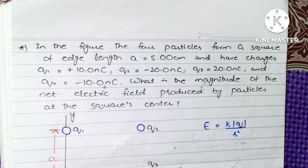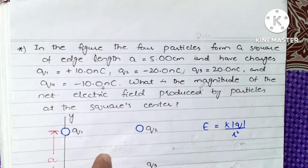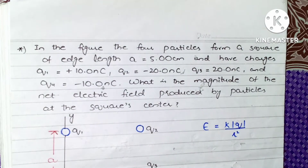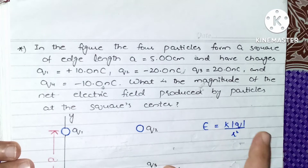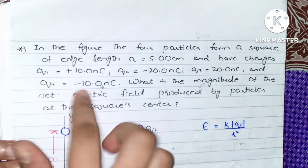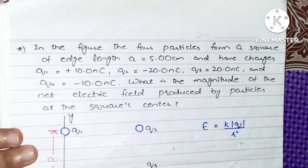Dear students, hope you all are doing well. This is the question for today's video, in which our task is to find out the electric field produced by each of these charged particles at the square center. We know that the electric field is given by E = kq/r², where k is Coulomb's constant, q is the magnitude of the charges, and r is the distance from the charge particle to the point where we have to find the electric field.